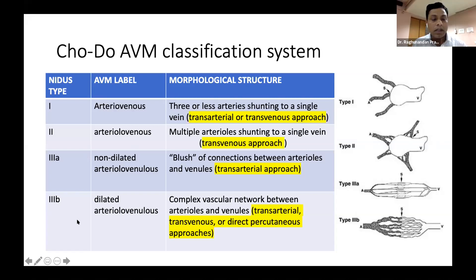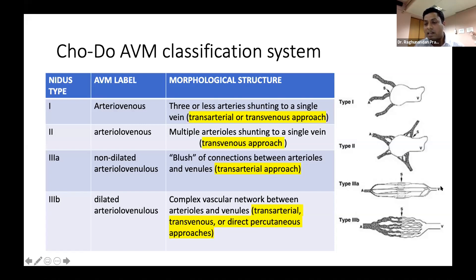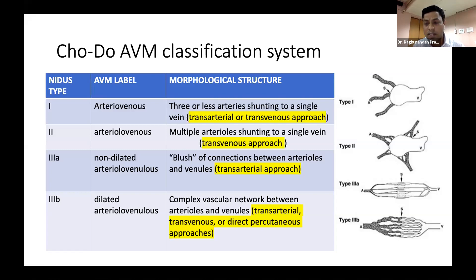For type 3A lesions, the transarterial approach is better and you can tackle with this route alone, as there is no much dilated venous base. Type 3B lesions are the most difficult to treat by endovascular means, because the fistulous connections are at the level of arterioles and the veins are also dilated with a large number of channels. For type 3B, you need to combine transarterial, transvenous, as well as the direct percutaneous approach.